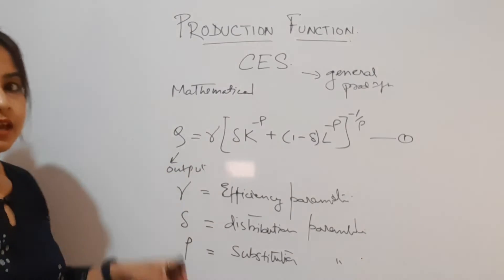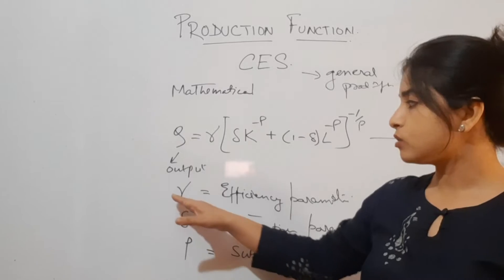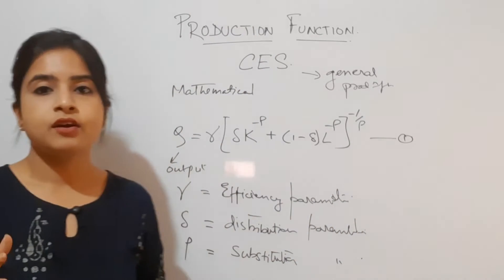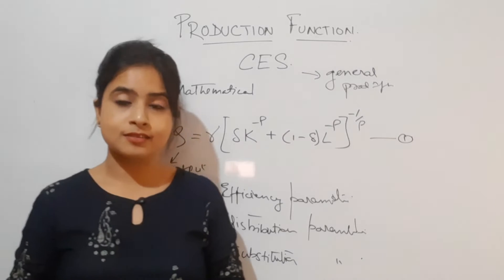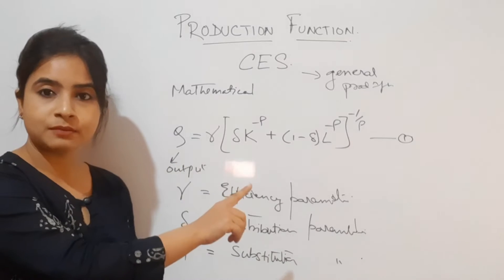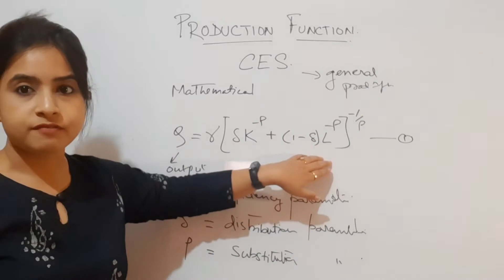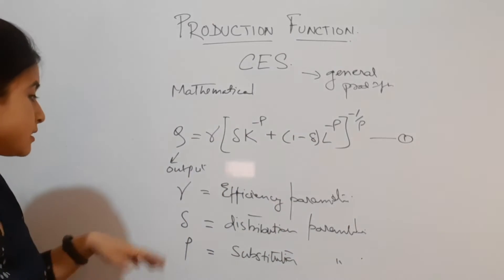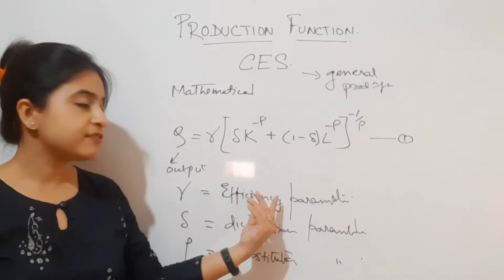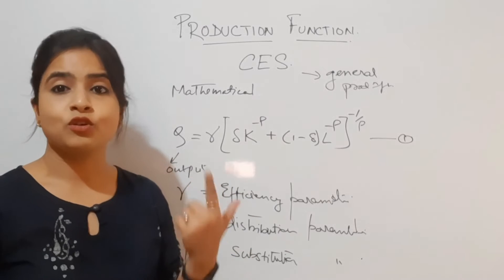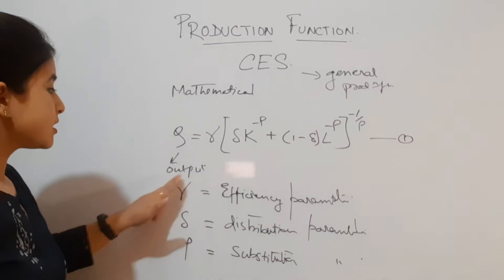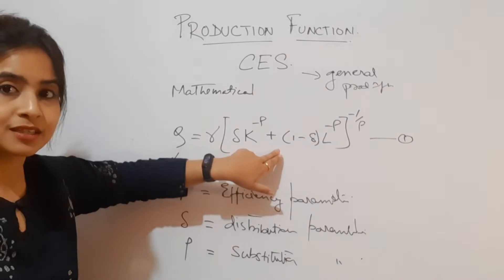Now let me walk you through how the efficiency parameter affects the production function. The causes of efficiency increment: if there is a change in the efficiency parameter gamma, there will be a change in the production function — and they are positively related. What are the causes for which the efficiency parameter might change? It may be technological change, or it may be a change at the organizational level. If that changes, gamma changes, and hence the production function changes.